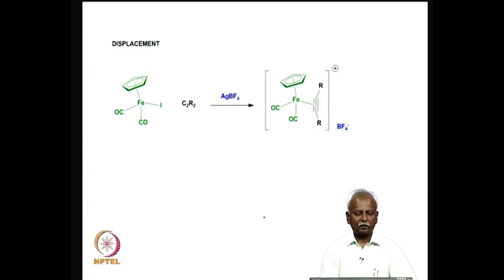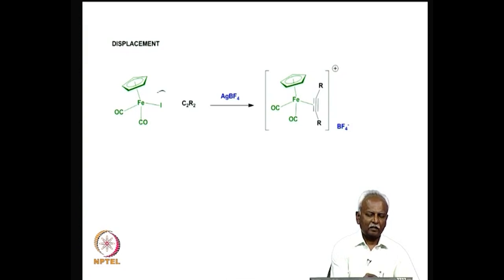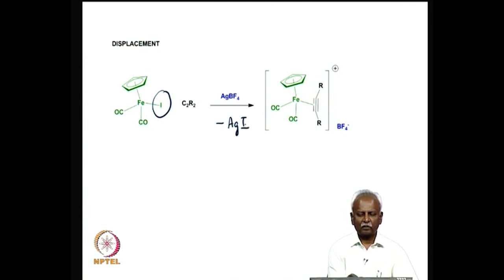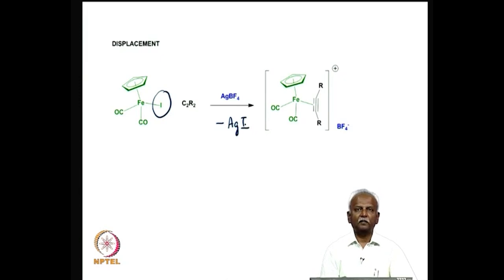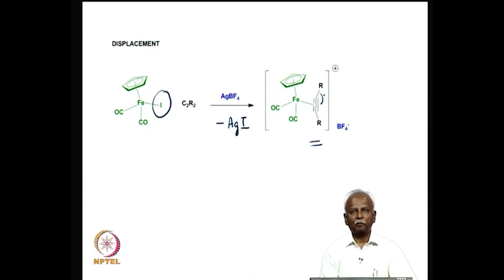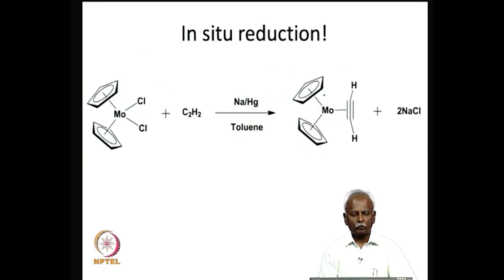You can replace the iron iodo compound with C₂R₂ or any acetylene in the presence of a species which will remove the iodide. What you end up with is precipitation of AgI and formation of an empty coordination site on the iron. This empty coordination site is now filled with the acetylene. Depending on the extent of back donation from the metal to the acetylene, you would have bending of this R group away from the metal atom to the extent to which electron density is pumped into the pi star orbitals.